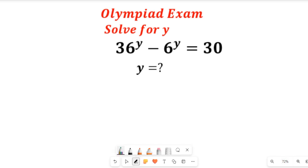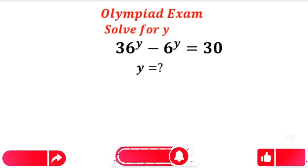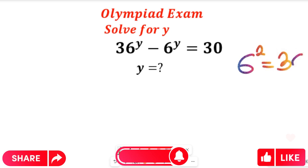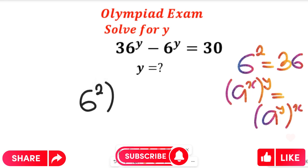As we solve this question, I want you to recall two laws of indices, and also recall that 6 to the power of 2 equals 36. If you know the law of indices, we have a to the power of x, to the power of y — this can equal a to the power of y multiplied by x. So we'll apply that law of indices, and rewrite 36 as 6 to the power of 2, all to the power of y.